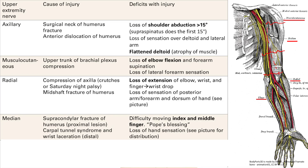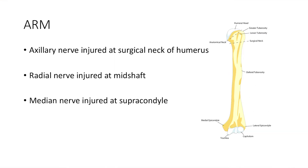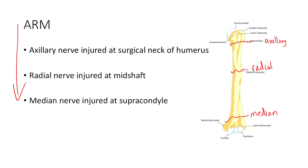Finally, the ulnar nerve: it's on the medial side, so a medial epicondyle fracture can damage it, or a hook of hamate fracture. The deficit is difficulty moving the ring and pinky finger, with corresponding loss of hand sensation. A useful mnemonic for humerus fractures: going down the arm, surgical neck fracture damages the Axillary nerve, mid-shaft fracture damages the Radial nerve, and supracondyle fracture damages the Median nerve — spelling ARM.